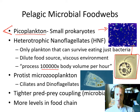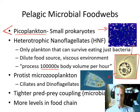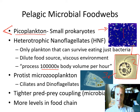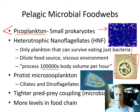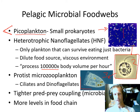Heterotrophic nanoflagellates in turn may be eaten by larger single-celled organisms — protist microzooplankton like ciliates and dinoflagellates (paramecium is an example of a ciliate). Some dinoflagellates are autotrophs, but others are heterotrophs that eat heterotrophic nanoflagellates. So here we have three levels in the food chain and we still haven't gotten beyond single-celled organisms. The next level would probably be larger zooplankton or small fishes — we'd finally be getting into multicellular organisms only by the fourth level in the pelagic food chain.